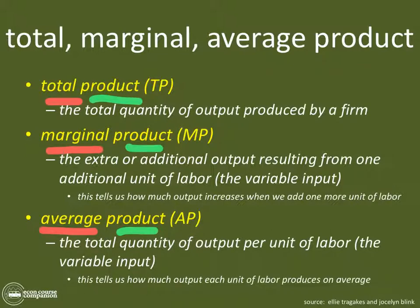Average product is just taking that total quantity and dividing it by the total quantity — so in the case of a firm, it's the total quantity of output per unit of labor. For product, we are always dividing by — or to think about it mathematically — the denominator is always quantity.